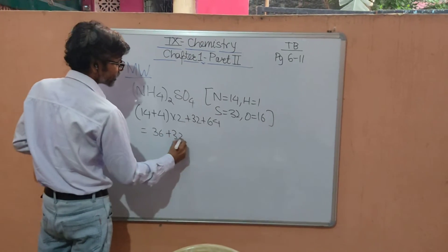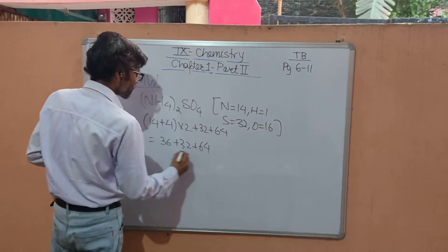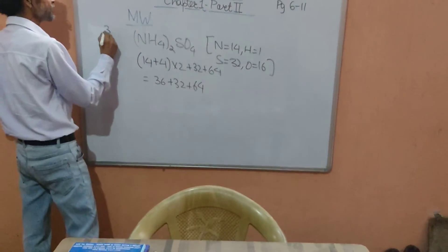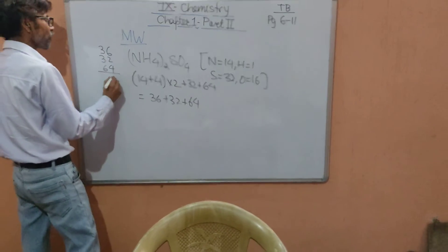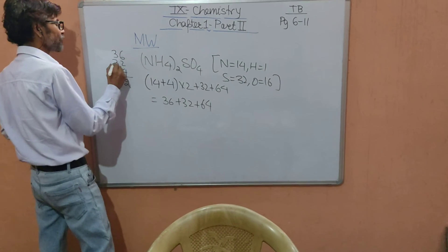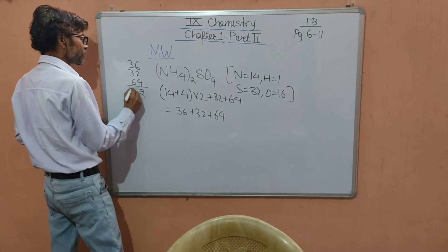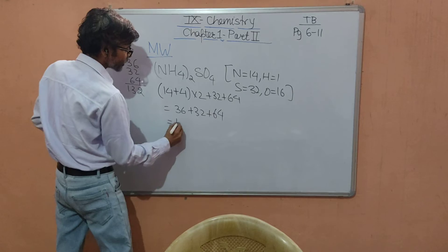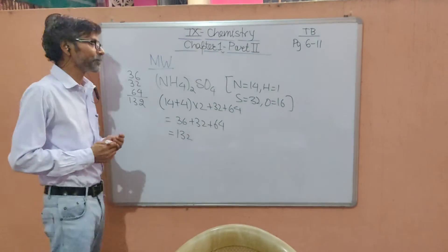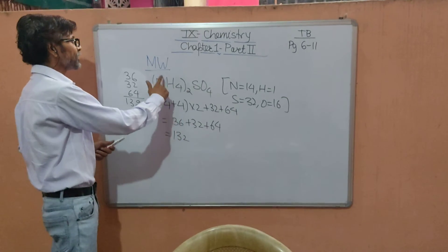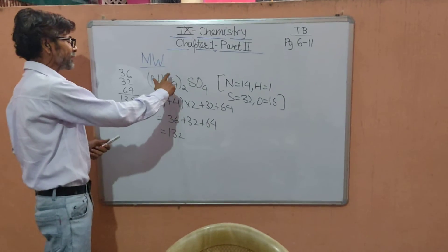If you check it, always write it in this way: 36, 32, 64, and then add. 6 to 8 is 14, carry 1, 3 plus 3 plus 6 plus 1 is 13. So it comes out to be 132. So in this way we are able to calculate the molecular weight even when some elements are in brackets and multiplied by a number.